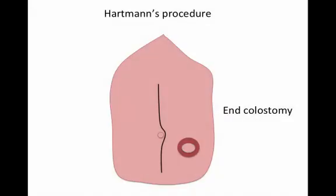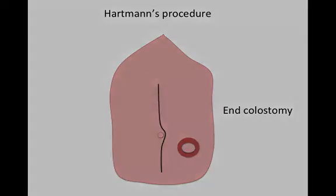This Hartman's procedure resulting in an end colostomy is a reversible procedure. When the patient is optimised — usually the earliest is six months — they can be brought back to have a procedure where bowel continuity is restored, therefore avoiding the need for a lifelong stoma bag.